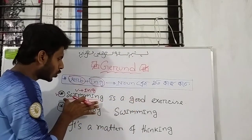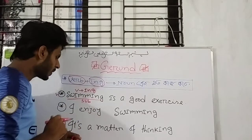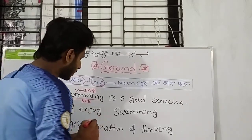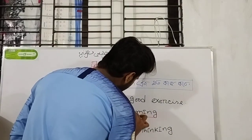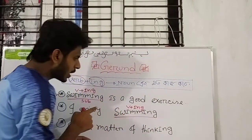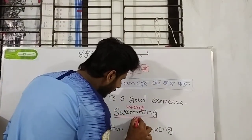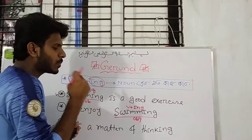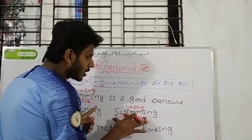Swimming is called swimming. Then, 'I enjoy swimming.' So, this is verb plus ing. What is this? Object. When you see object, object is called object. So, swimming is called object.